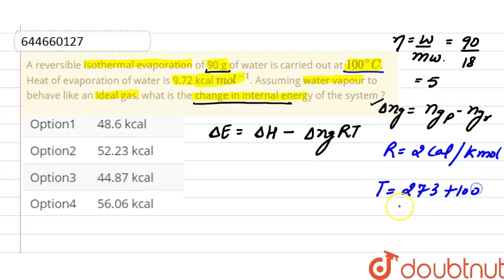And temperature here will be 300 Kelvin. Okay, and here the value of heat of evaporation of water is given for 1 mole, so we will find out for 5 moles of water, and this will be 9.72 times 5.